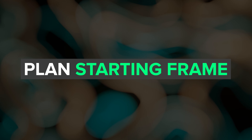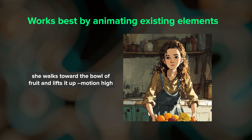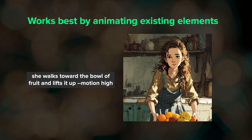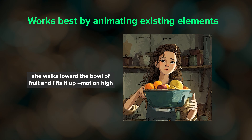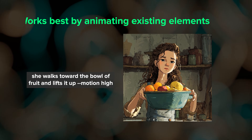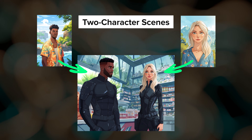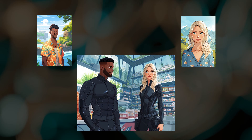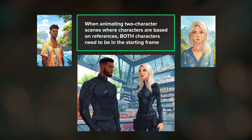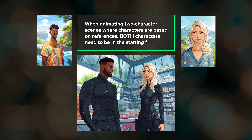My next tip is to plan your starting frame. The video model works best by animating elements that are already in your scene. If you want your main character to interact with an object or another character, try to have all characters and items visible in the scene from the start. This is especially important when using character or omni-reference to create two-character scenes that you plan to animate, because both characters need to be in your starting image. You cannot introduce a new reference character later since video prompts do not support the omni-reference parameter.